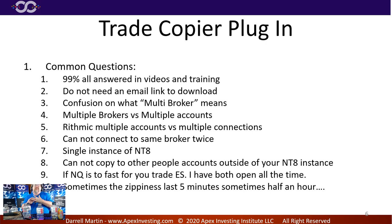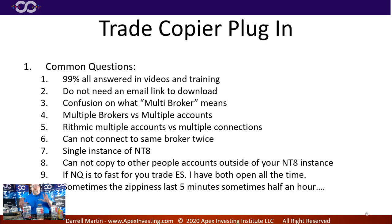If NASDAQ is too fast for you, trade ES — I have both open all the time. People think it's too zippy right at the open, and I know we have the dark zone five minutes before and five minutes after, but sometimes that zippiness lasts more than five minutes — sometimes 30 minutes. If it's too zippy, either check out ES or just let NASDAQ slow down a little. In the first 10, 15, 20, 30 minutes, it can zip around and jump over your orders.